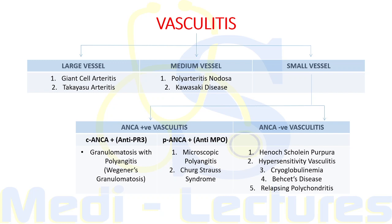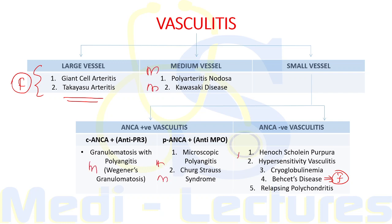In contrast to other autoimmune diseases, male preponderance is seen in vasculitis. Only three vasculitides are more common in females: Giant Cell Arteritis, Takayasu Arteritis, and Behcet's Disease. All the rest are more common in males. One more exception: Relapsing Polychondritis is equally seen in males and females.